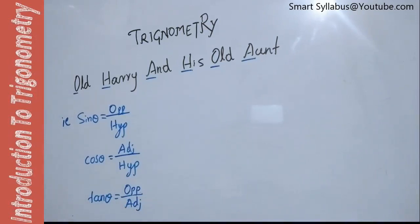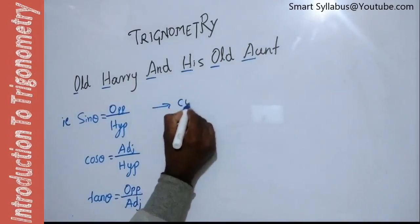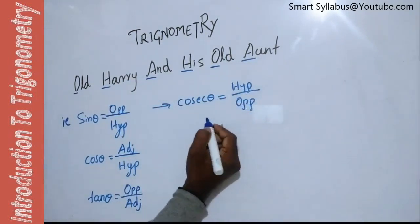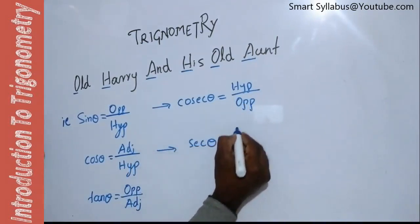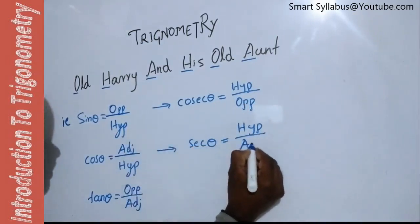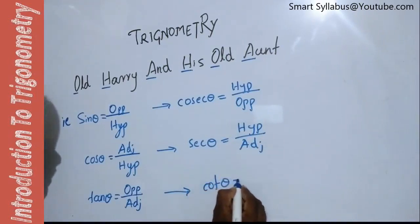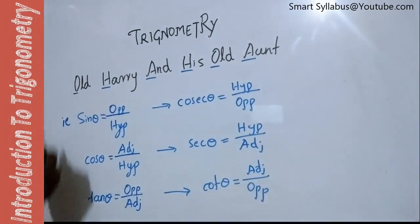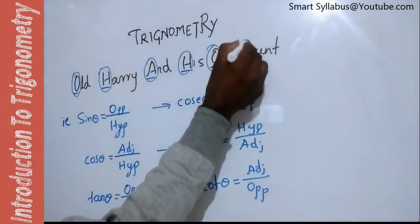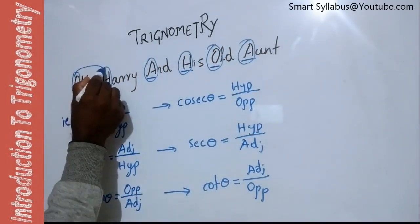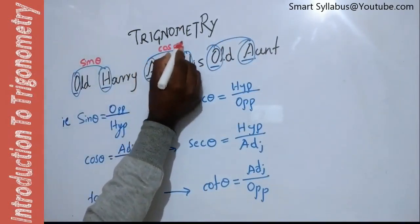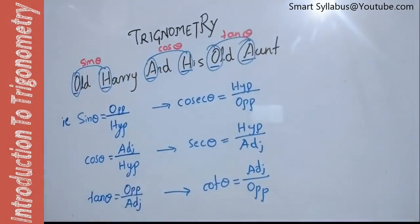Isn't that a very easy way to remember the six ratios of trigonometry? Further: cosec theta = reciprocal of sin = hypotenuse upon opposite; sec theta = hypotenuse upon adjacent; cot theta = adjacent upon opposite. So the phrase 'Old Harry And His Old Aunt' gives us sin theta, cos theta, and tan theta directly, and their reciprocals give cosec, sec, and cot respectively.